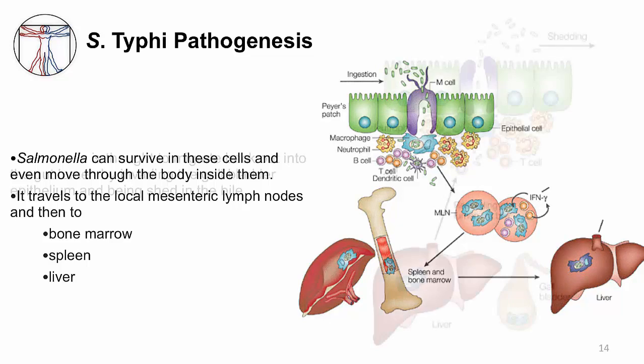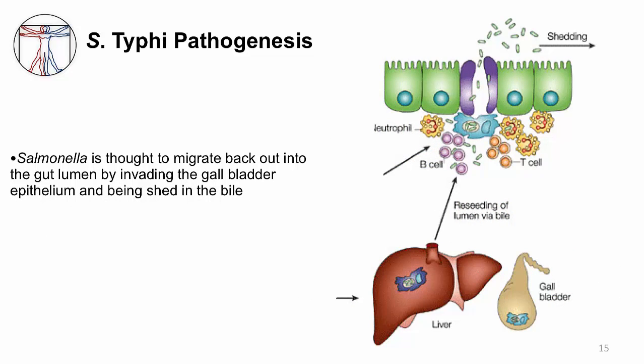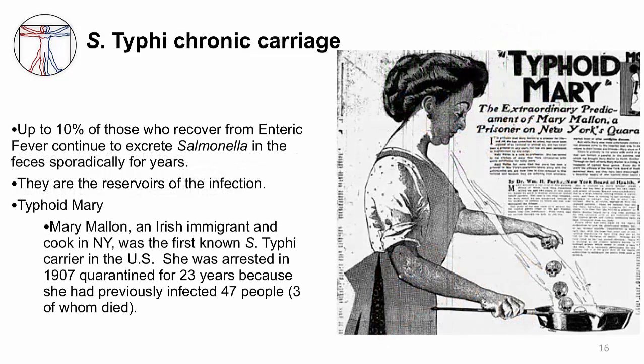Salmonella Typhi also migrates to the liver, and you can potentially palpate the subsequently enlarged liver in your patient. The liver is a potential exit site because it is connected to the gallbladder through the biliary system. By infecting the epithelium of the gallbladder, Salmonella Typhi can be shed with bile into the gut lumen and exit the host. The problem is that transmission occurs when people are not sick — when sick, the bacteria is in the blood and can't be as easily spread. After recovery, up to 10% of people can intermittently shed bacteria in stool for years.